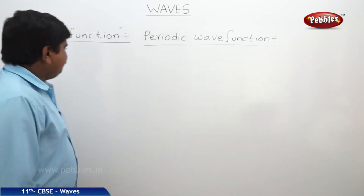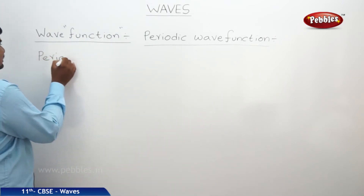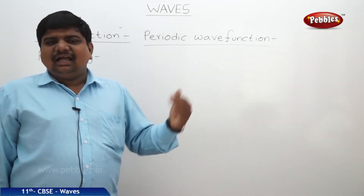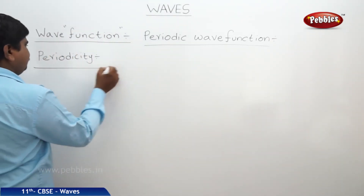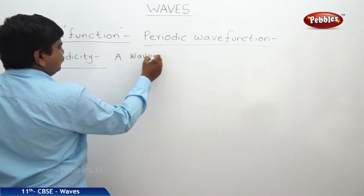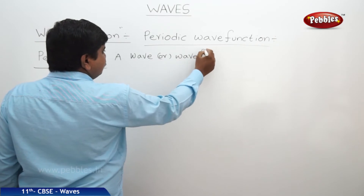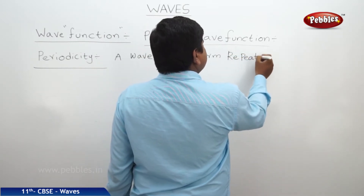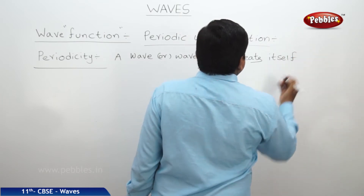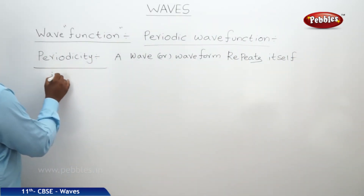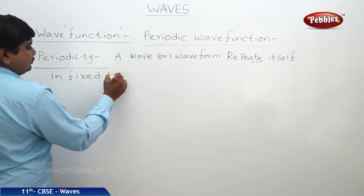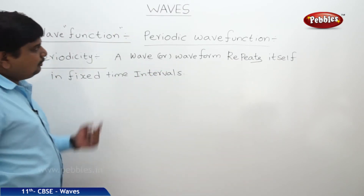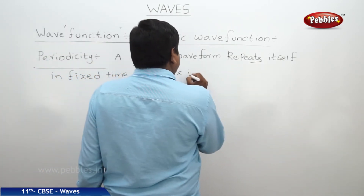A periodic wave function means a periodic path. Periodicity means continuous repetitions at fixed time intervals. A wave or waveform that repeats itself at fixed time intervals is called a periodic wave function or a periodic wave.